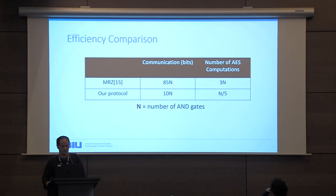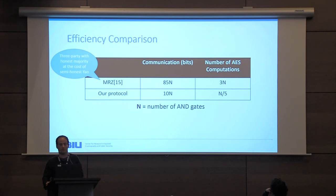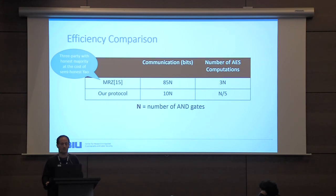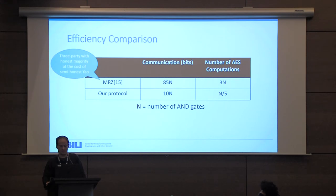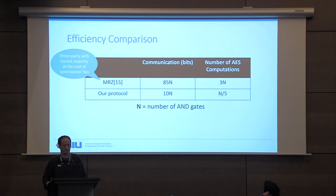For an efficiency comparison: a CCS 2015 protocol by Mohassel, Rosulek, and Zhang, presented in the same setting of three parties with one malicious corrupted party, has the same communication as a semi-honest GMW protocol. It is a very efficient protocol, but for each AND gate it requires 85 bits, whereas we need only ten, and we require far fewer AES computations per AND gate. Of course, their protocol achieves constant rounds, which has its own justification.